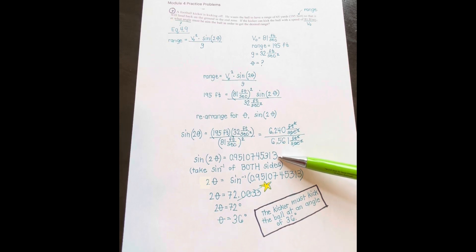Now, when you have this equation, sine of 2 theta equals this long number, the next step is to take the inverse sine of both sides. So the inverse sine of this is just 2 theta. The inverse sine of this is 72.0033, which then has too many significant figures. So we get 2 theta equals 72, so theta equals 36 degrees, which tells us that the kicker must kick the ball at an angle of 36 degrees.